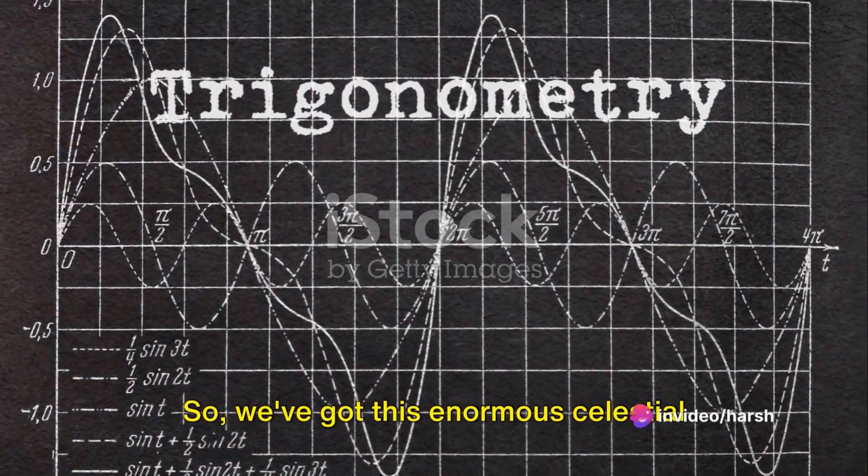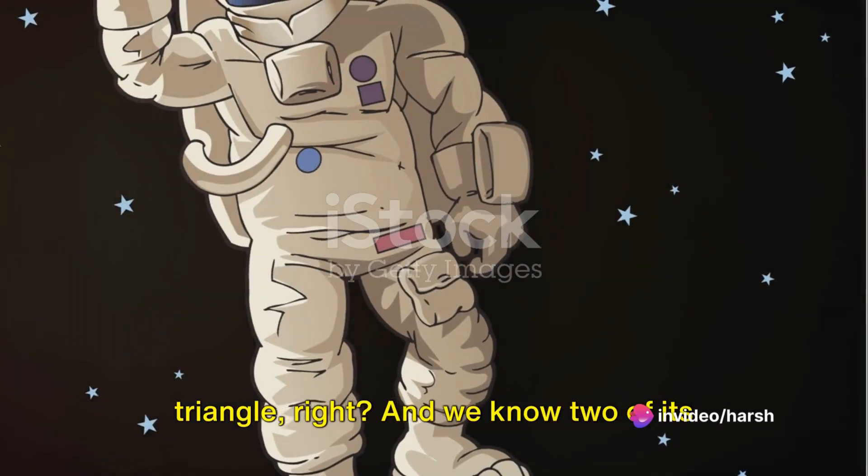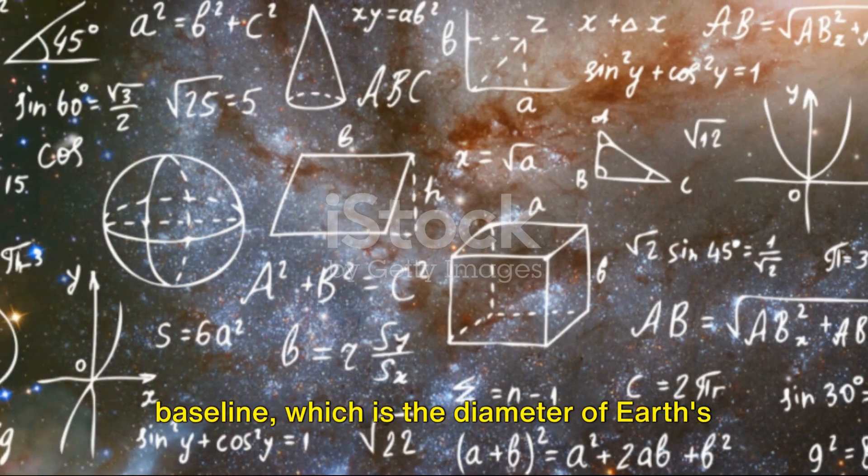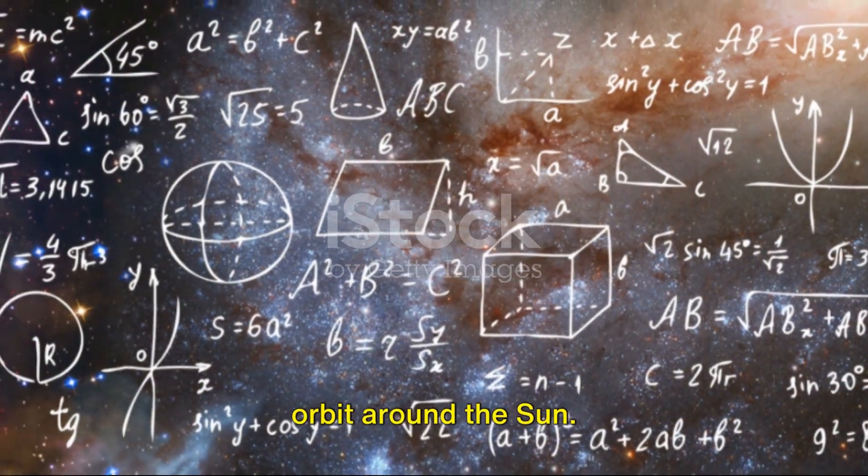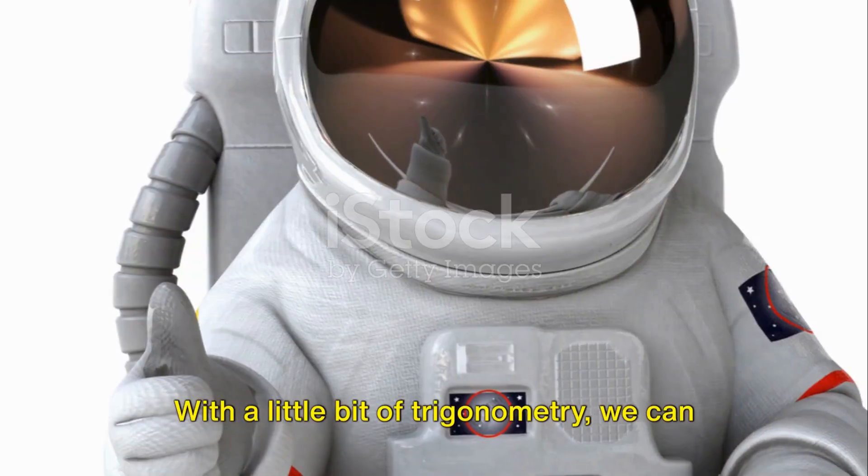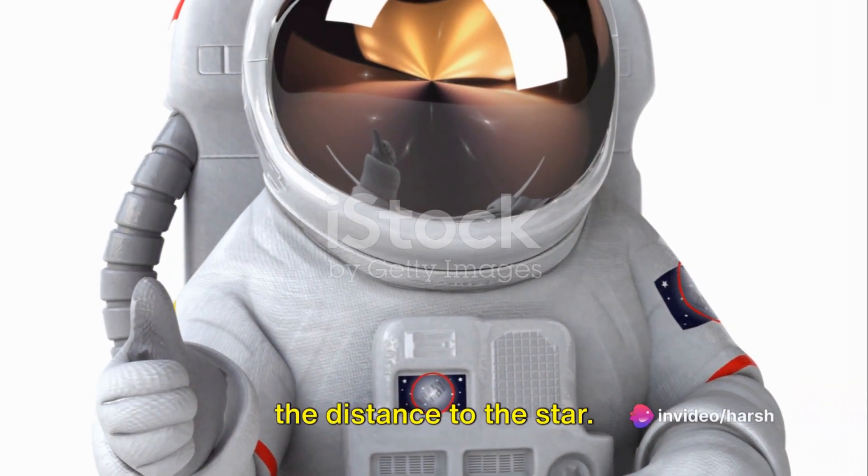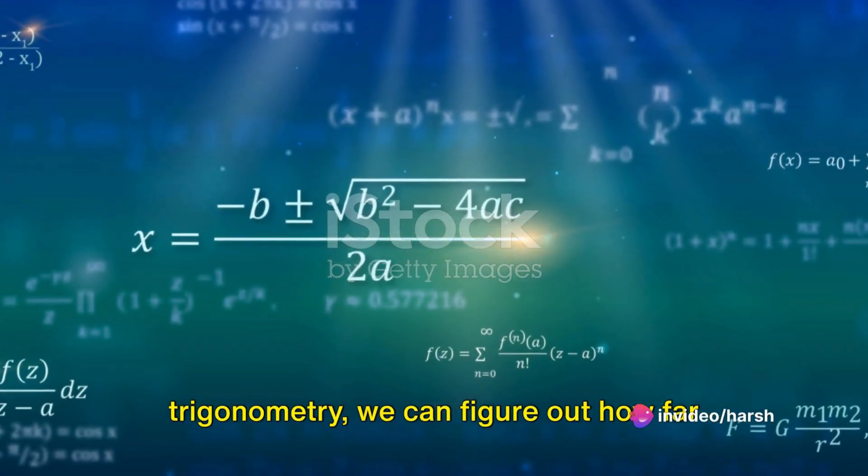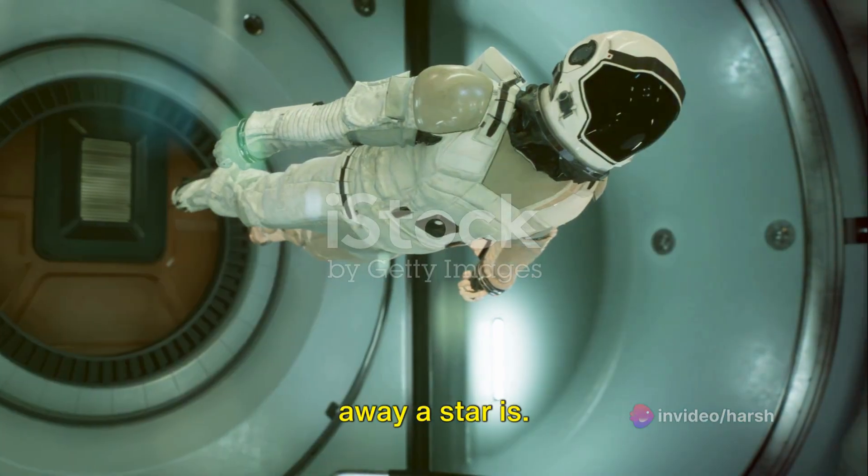So, we've got this enormous celestial triangle, right? And we know two of its angles and one of its sides—the baseline, which is the diameter of Earth's orbit around the Sun. With a little bit of trigonometry, we can solve for the other sides and figure out the distance to the star.